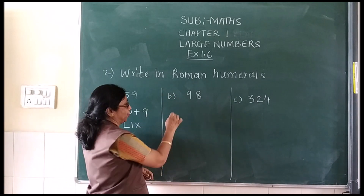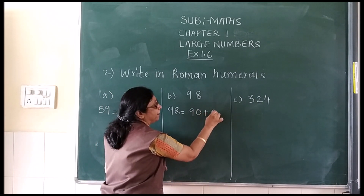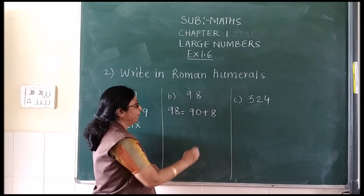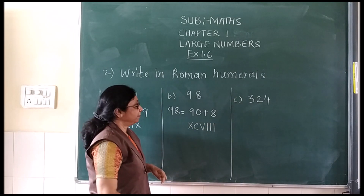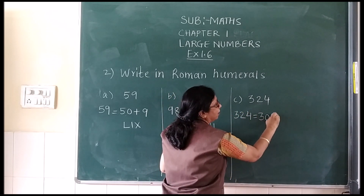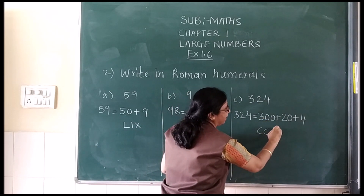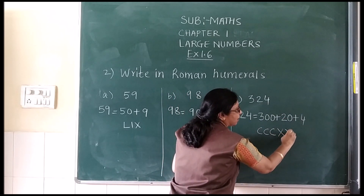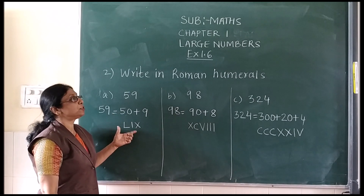Second sum: write 98 in expanded form — 90 plus 8. How do you write 90? XC. And 8 = V and III (triple I). Third sum: 324 — write in expanded form: 300 plus 20 plus 4. Now 300 = CCC, because C stands for 100, so triple C stands for 300. 20 = XX (double X), and 4 = IV. So in this way you can write the Roman numerals for the given Hindu Arabic number.